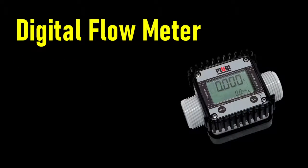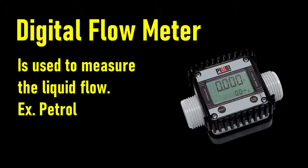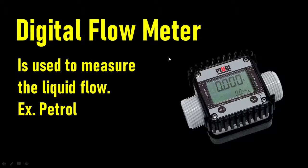Digital flow meter. Digital flow meter is used to measure liquid flow — particularly in petrol pumps and in manufacturing and factories where an exact amount of liquid is required. It measures how much liquid is flowing and sends that data to the system. The system then processes it and decides whether the flow has to stop or continue. Any liquid flow can be measured using the digital flow meter.